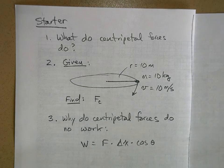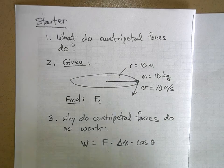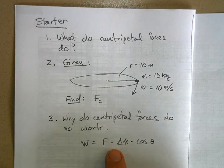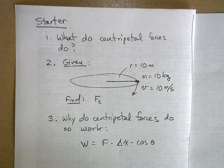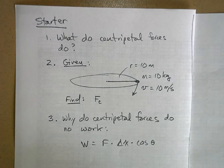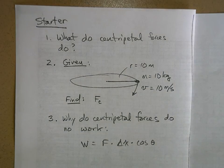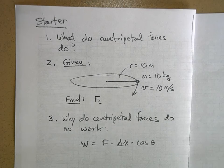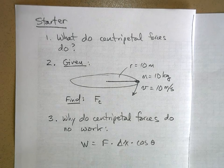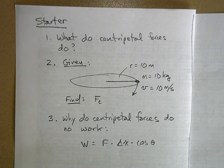And then number three, why do centripetal forces do no work? Here is a hint: work equals force times displacement times the cosine of the angle between the force and the displacement. If you're watching this online, if you were absent or whatever, pause the YouTube video now, try to work these and then hit play to hear the solution.